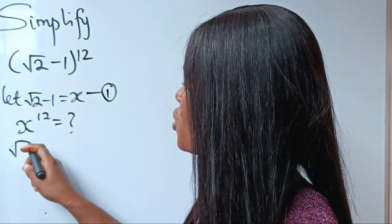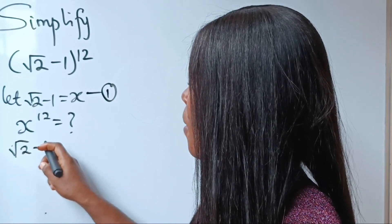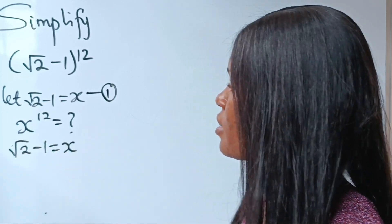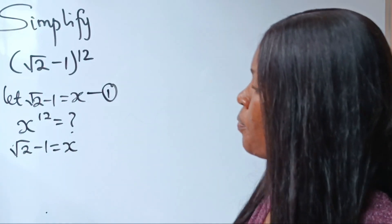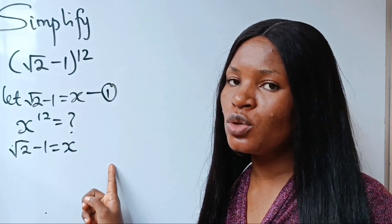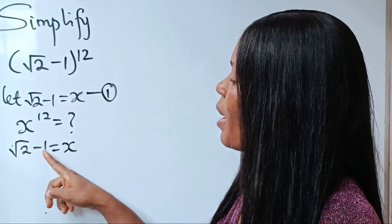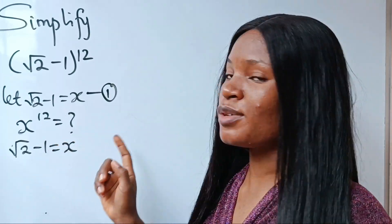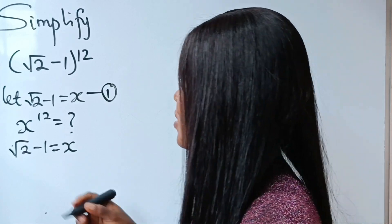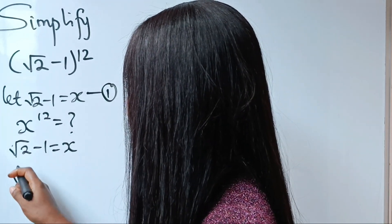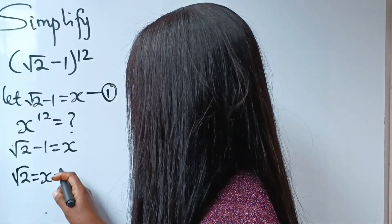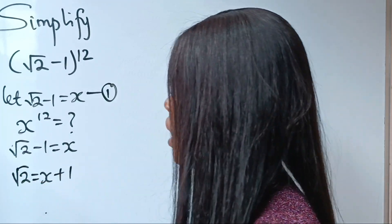We said √2 minus 1 is equal to x. Now let's transfer the minus 1 to the other side — minus 1 crosses to become plus 1. So we are going to have √2 is equal to x plus 1.